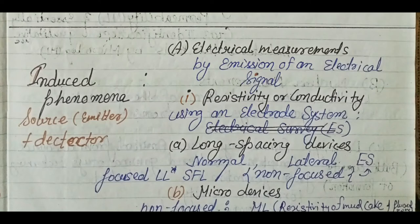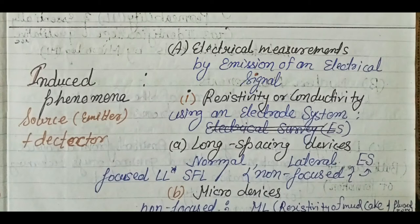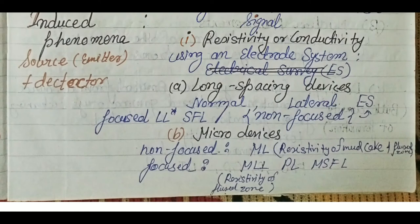Under electrical measurements, the source emits an electrical signal. There is a resistivity log, also called a conductivity log, using an electrode system. There are two kinds of devices: long-spacing devices and short-spacing devices. In long-spacing devices there is the normal log and the lateral log, which are non-focused logs. In focused logs, the energy is directed in a certain direction rather than spreading through the whole formation.